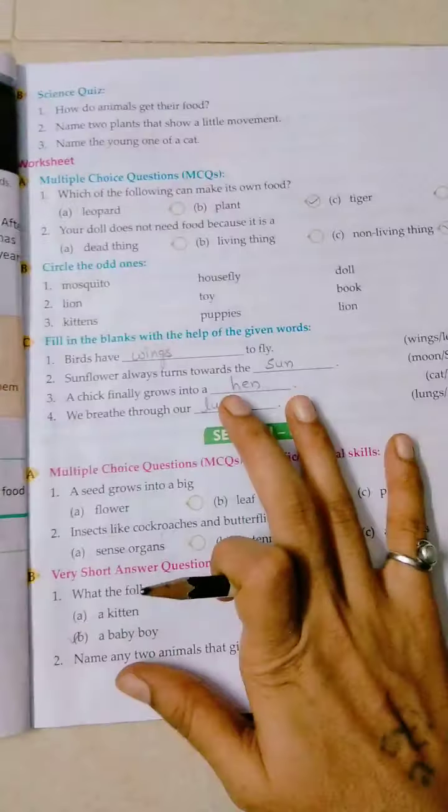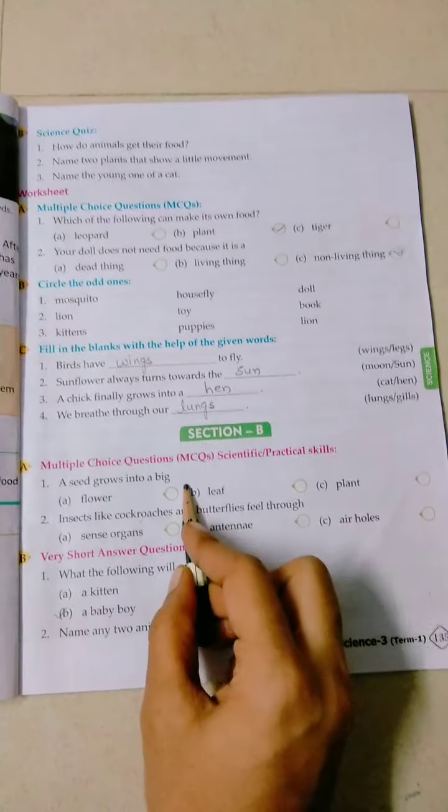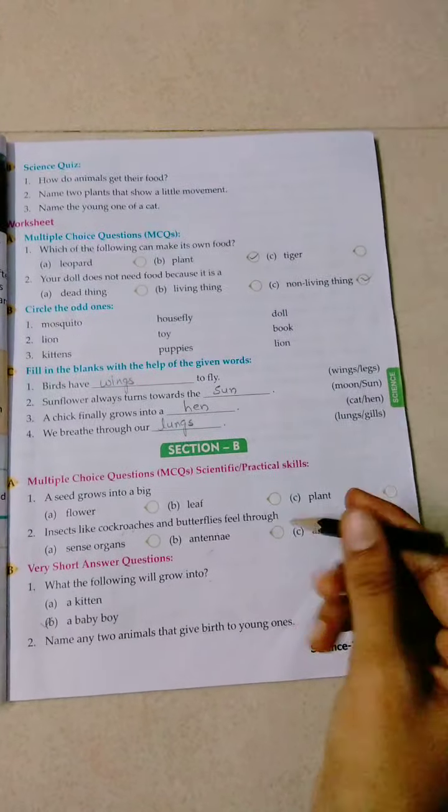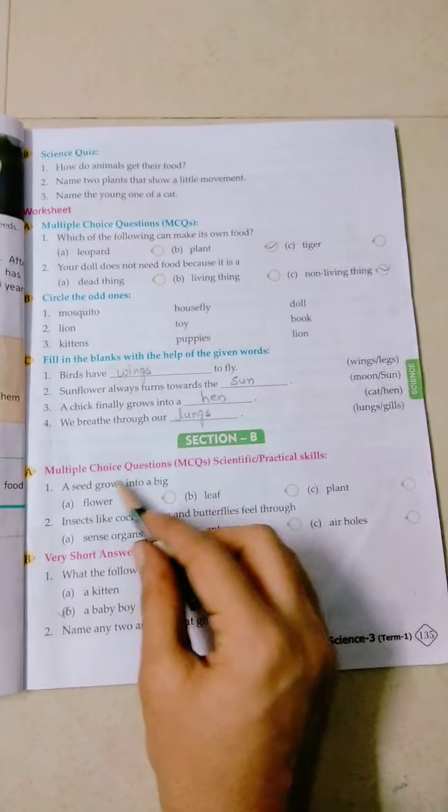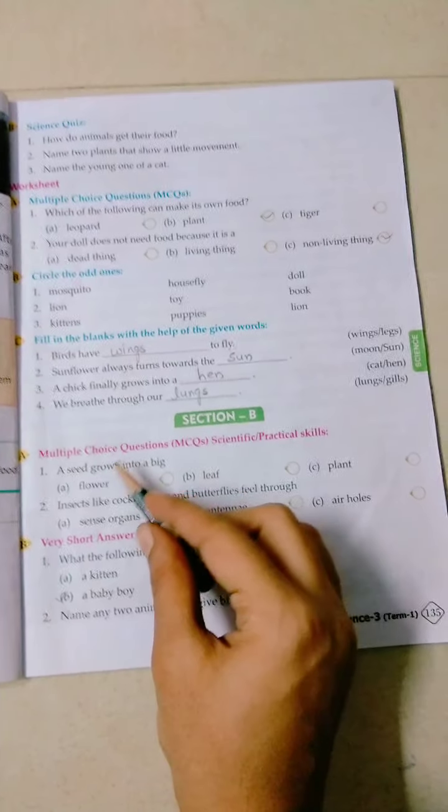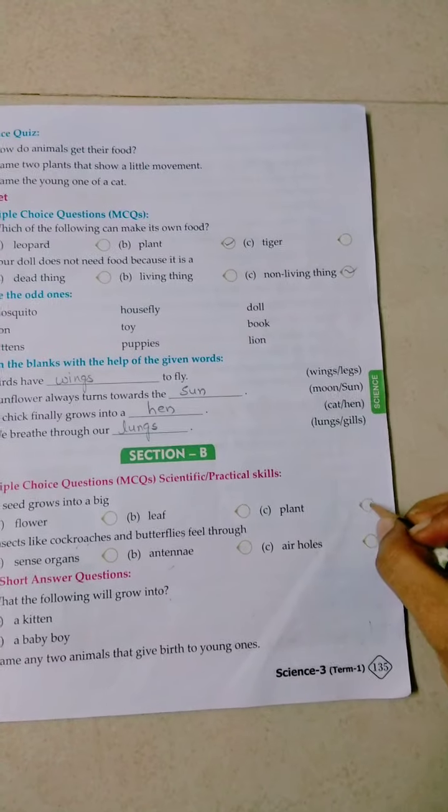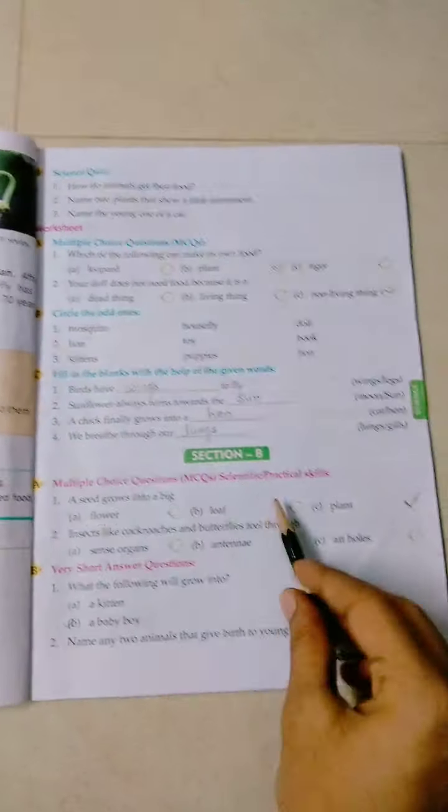So let's solve the first question of section B. First question is multiple choice questions. A statement is asked with three options given. You have to put a tick mark next to the correct option. A seed grows into a big - seed will grow into what? Obviously into a plant. We learned in the whole chapter that seed can grow into a plant. So the plant option is correct.